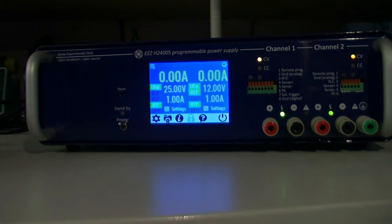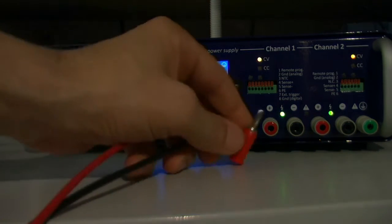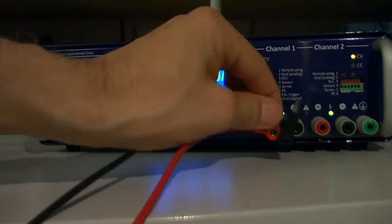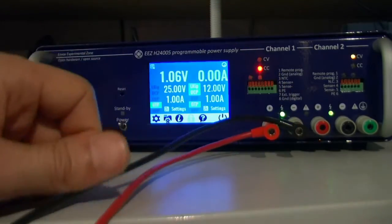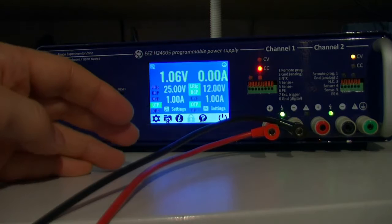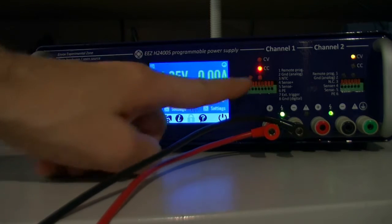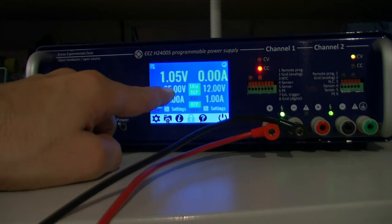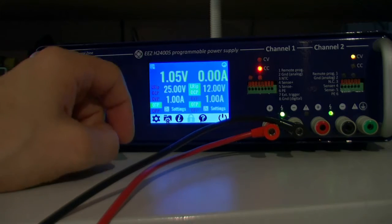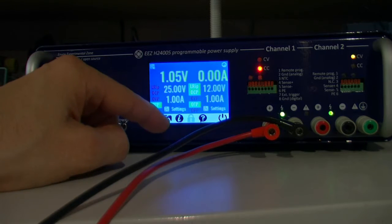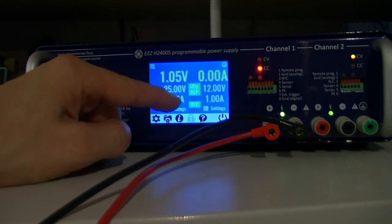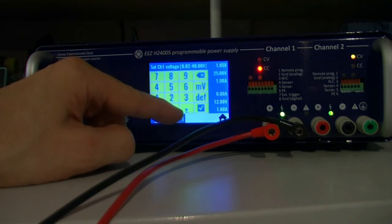If I connect some load, in this case it's a 1 ohm power resistor, it enters constant current mode because the voltage is set too high and we have a limitation on the output current.